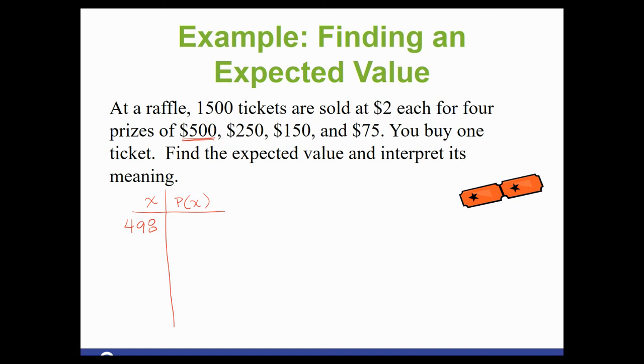And that would be the same for the next one. If we won the 250, we're actually walking away with 248, because we're subtracting the cost of the ticket. So each one of our prizes, less $2. But there's one more. What if you don't win? So the last prize, in essence, would be $0. And then you have to take out your $2 ticket price. It's actually a negative 2.